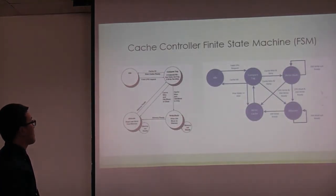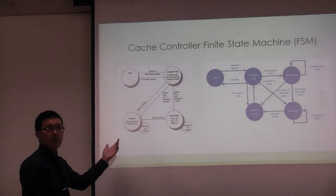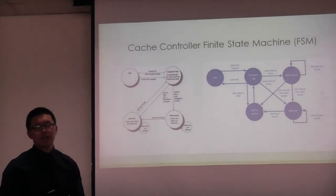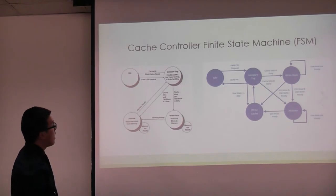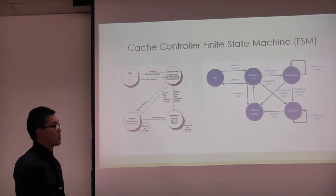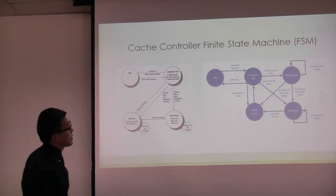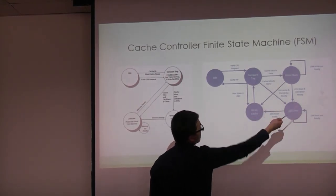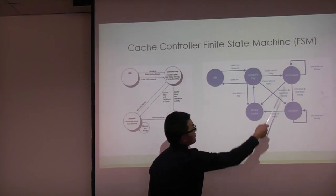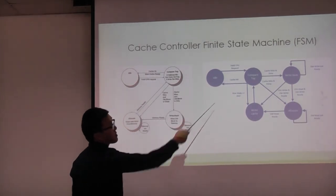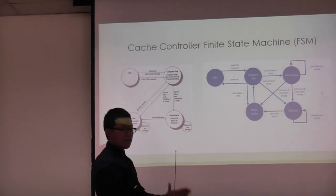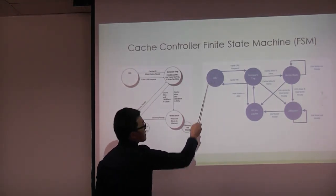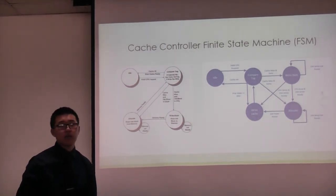The cache controller uses a finite state machine. We modified the textbook FSM by introducing a write-cache state to simplify timing issues. The states are: compare-tag, write-back (writing dirty data to data memory), allocate (reading from data memory), write-cache (updating the cache), and idle. Both write-back and allocate transition to write-cache to update the cache, then return to compare-tag, then to idle to signal the processor that data is ready.